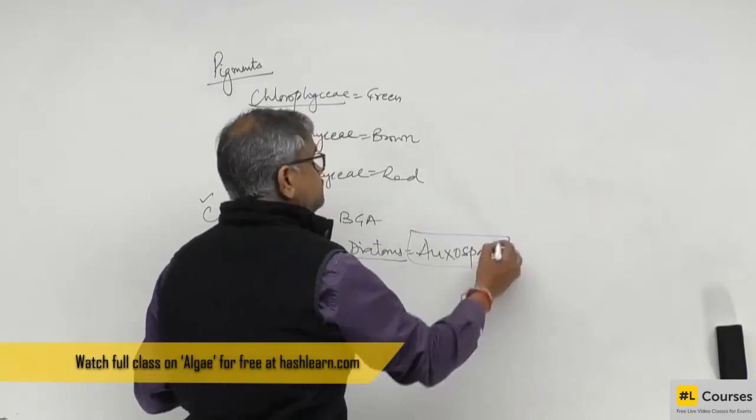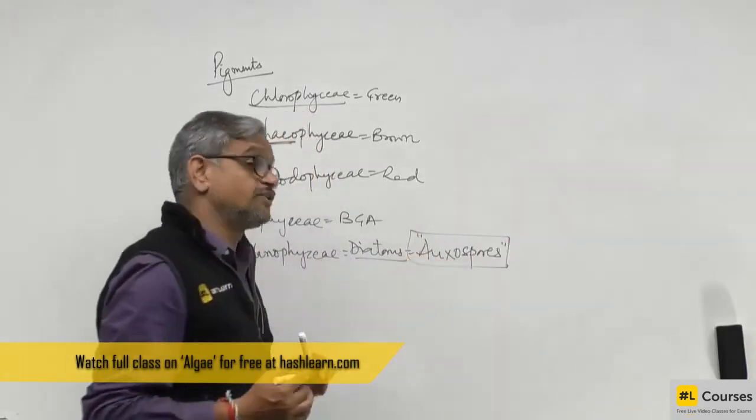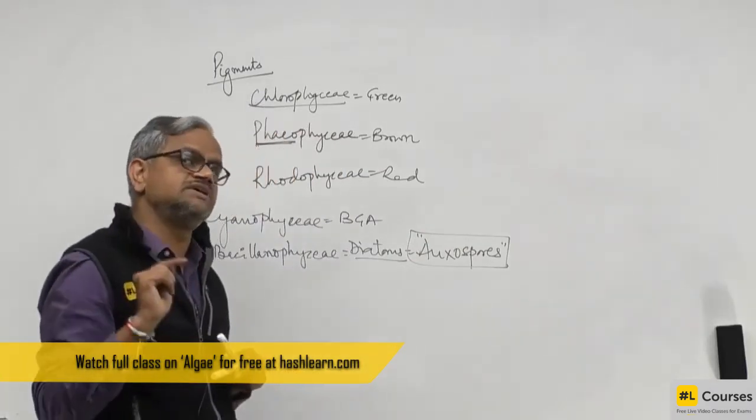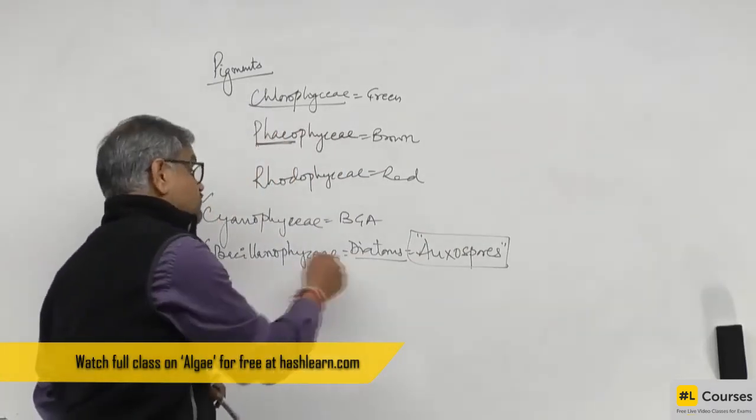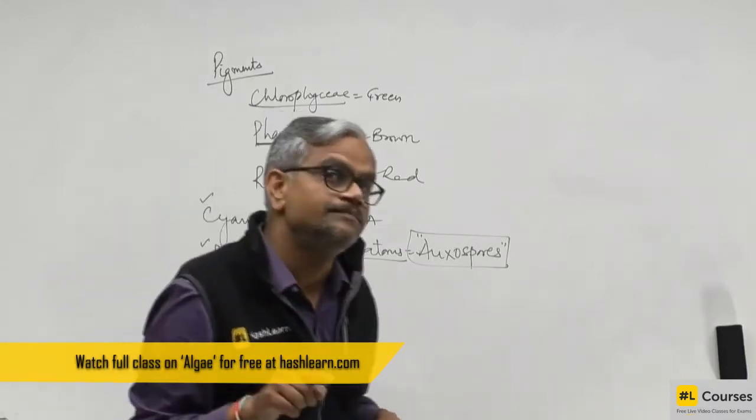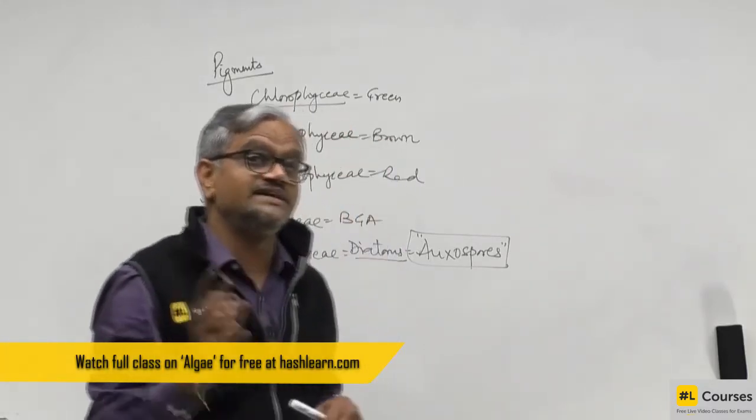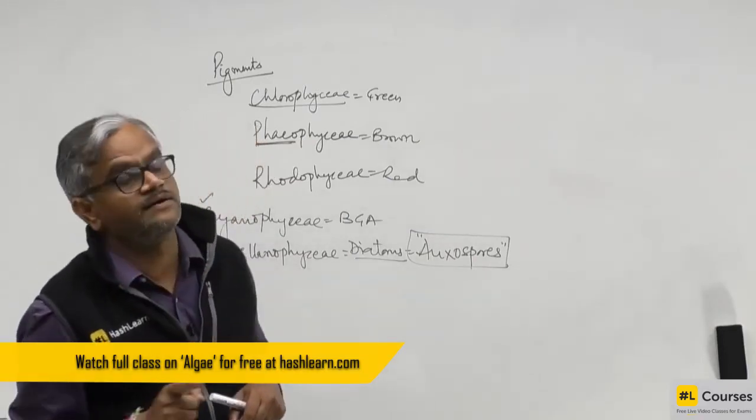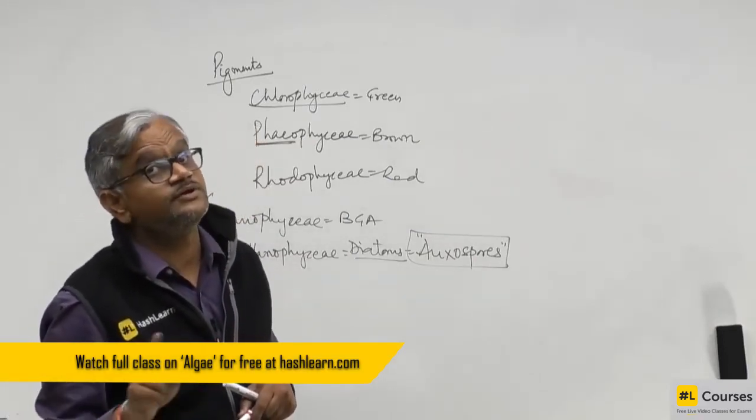Very important question: oxospores are produced by, even protista answer will be given, planty also will be given, you have to mark protista. Do not say sir bacillariophyceae is an algae and algae is a plant. Bacillariophyceae is a diatom which is exhibiting the characteristic of protista, unicellular eukaryotic.